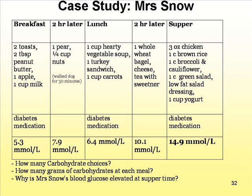At supper time, she has three ounces of chicken — that will not affect your sugars. A cup of brown rice is about three carbohydrate choices, or 45 grams. She has a cup of broccoli and a cup of cauliflower — those are free foods. A cup of green salad with low-fat salad dressing is also free food. She included a cup of yogurt, which is approximately one carbohydrate choice. So: yogurt is one choice, rice is three choices — together, four carbohydrate choices, equal to 60 grams of carbohydrates.